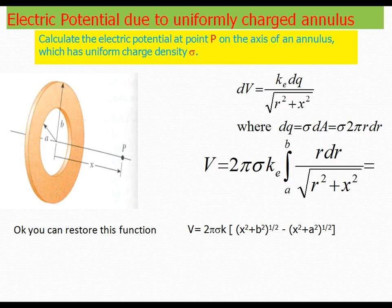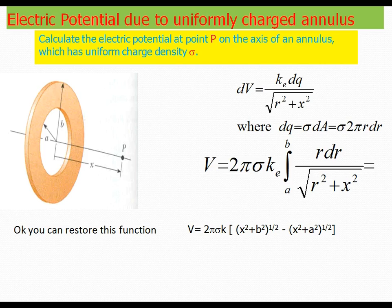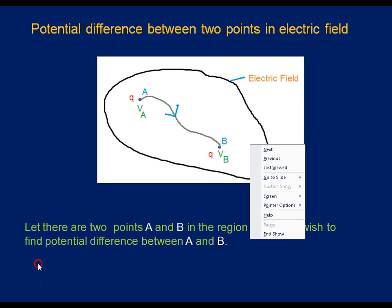Electric potential due to a uniformly charged annular disk with inner radius small a and outer radius small b. Again, calculate the potential on the axis due to the elemental charge K dq by root(r² + x²). With sigma as surface charge density, take an elemental ring of radius r and thickness dr. Put the limit r varying from a to b and you get the result. You can solve yourself just as in the disk case.